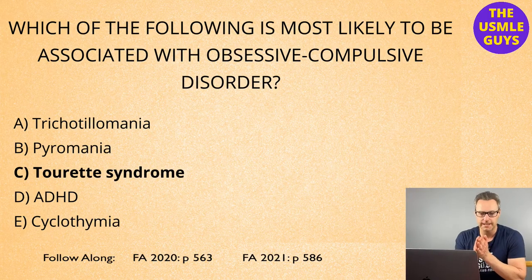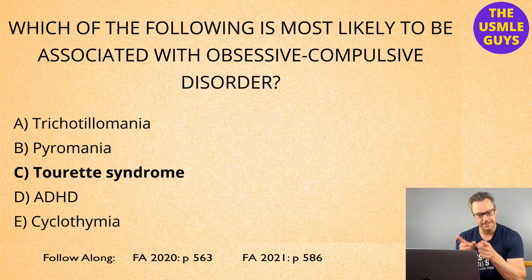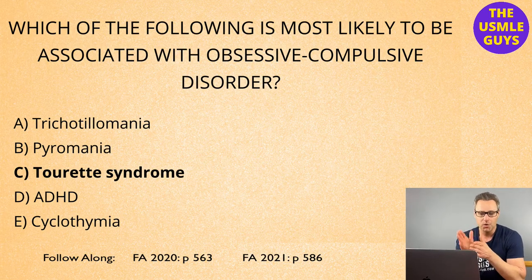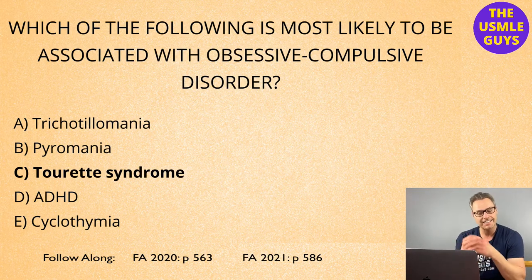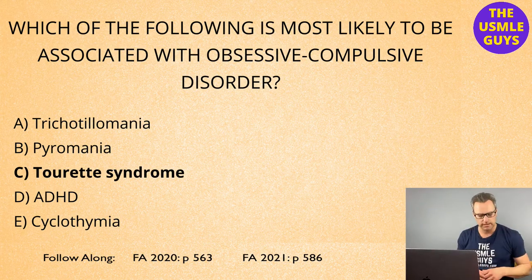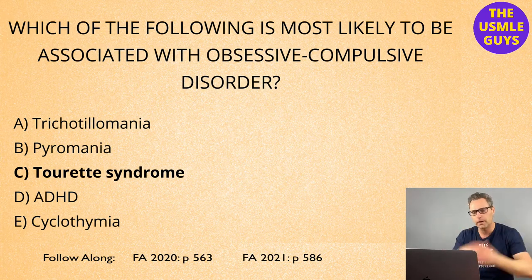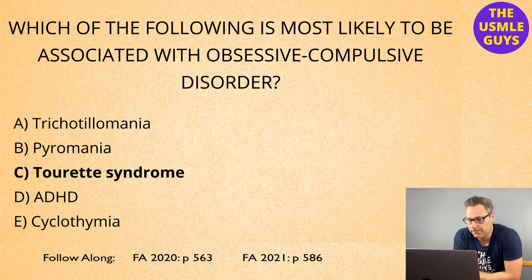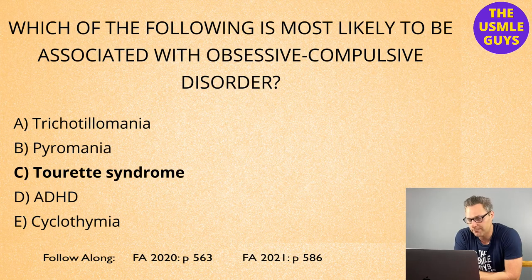The correct answer here is C — Tourette syndrome. Obsessive-compulsive disorder is different from obsessive-compulsive personality disorder. In OCD, obsessions lead to distress, and as a means for minimizing that distress, patients perform repetitive actions known as compulsions — whether it's tapping something, counting tiles, or turning a knob multiple times. While these relieve stress in the moment, it's temporary, not a permanent fix — that's why they do it again and again, creating a vicious cycle.